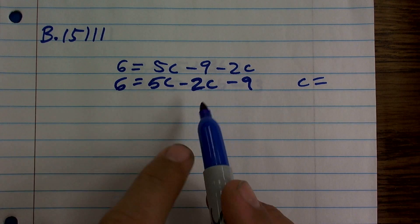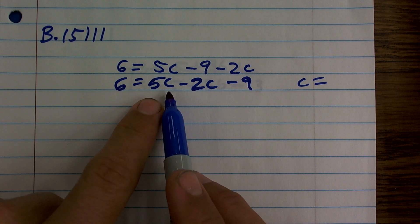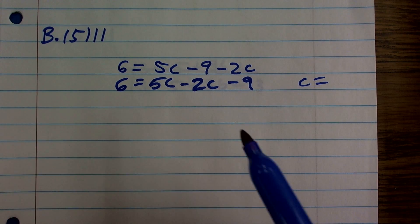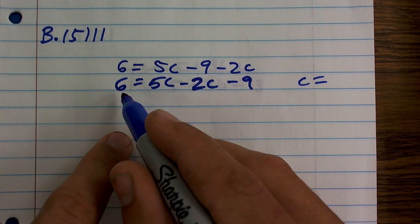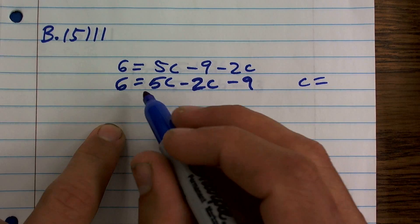There's a lot of different things. But just remember, think of it as like 5 cantaloupes minus 2 cantaloupes. It's going to be 3 cantaloupes. You're still going to have your unknown, your value of your variable there. You just subtract your coefficients.